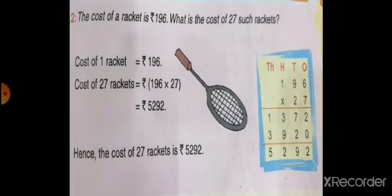And cost is always expressed in Rs. So the cost of 27 rackets is Rs. 5292. You must show multiplication with your statement.